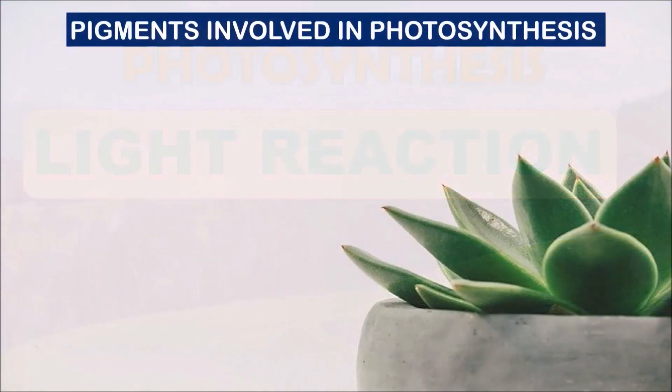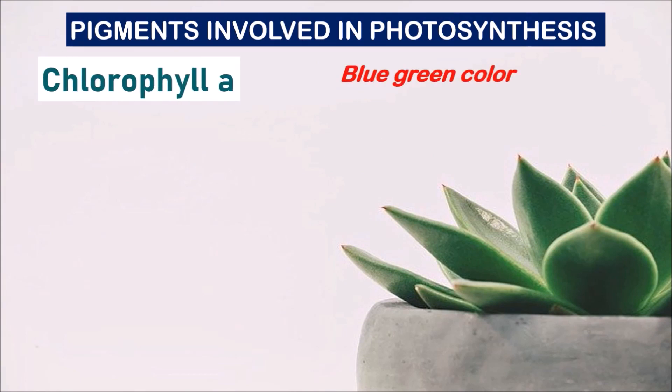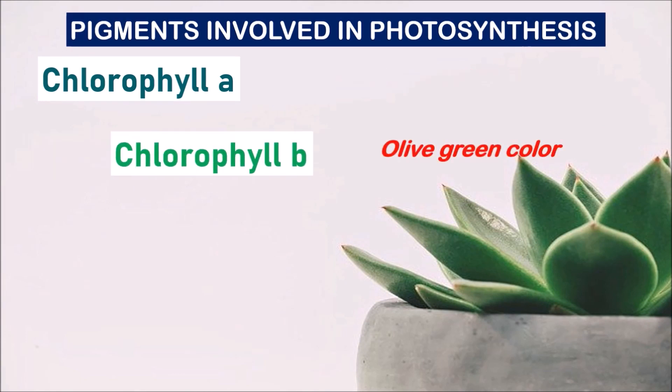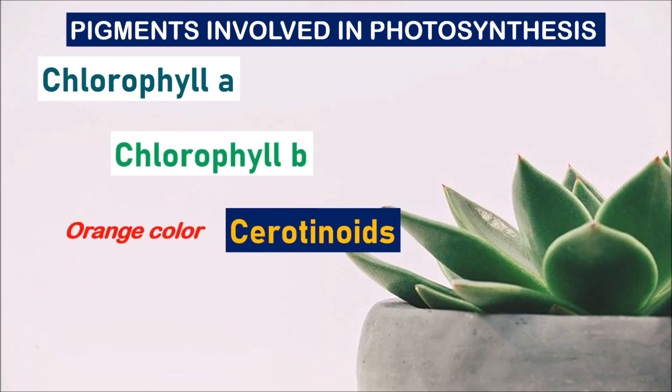Before going into the light reaction, let us list out the pigments involved in the light reaction. They are chlorophyll A, chlorophyll B, carotenoids and xanthophylls. These are the major pigments which are involved in the light reaction.